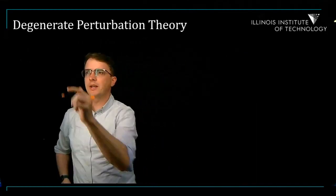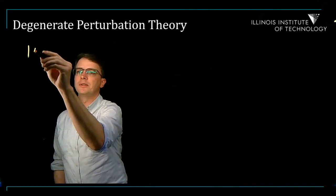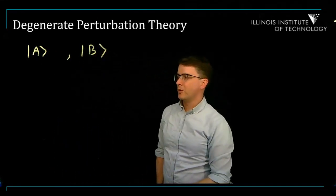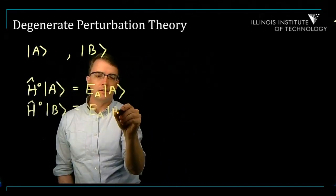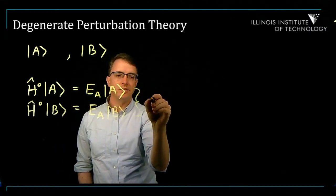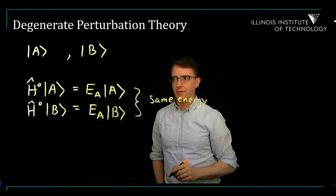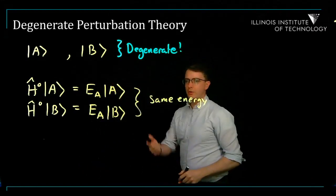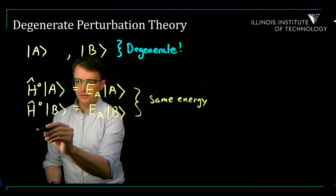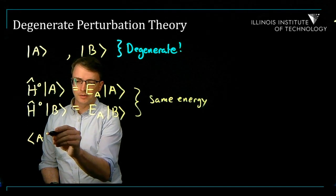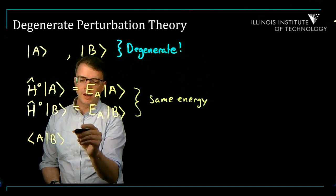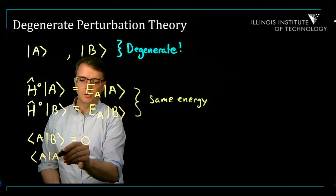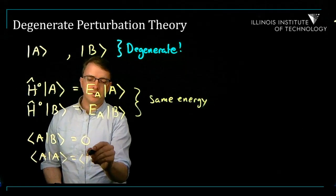The idea is: suppose I have two energy states, let's call them A and B, and they are both degenerate. So these two have the same energy — A and B are degenerate energy states. Even though they have the same energy they are different states, so we say they are orthonormal. So the inner product of A and B is 0, and the states are normalized: the inner products A,A and B,B are equal to 1.